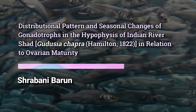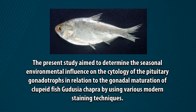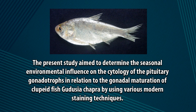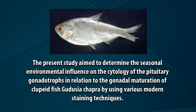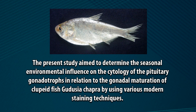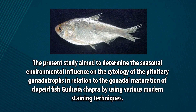Distributional Pattern and Seasonal Changes of Gonadotrophs in the Pituitary of Indian River Shad, Gudusia chhapra, Hamilton, 1822, in Relation to Ovarian Maturity, by Shrapni Barun. The present study aimed to determine the seasonal environmental influence on the cytology of the pituitary gonadotrophs in relation to the gonadal maturation of the clupeid fish Gudusia chhapra, using various modern staining techniques.